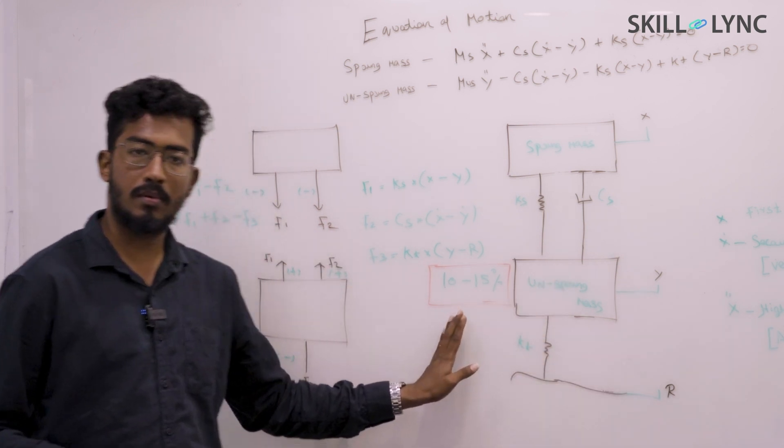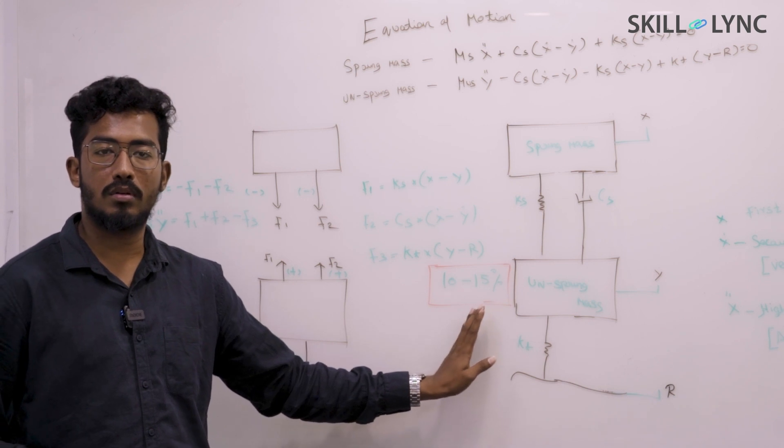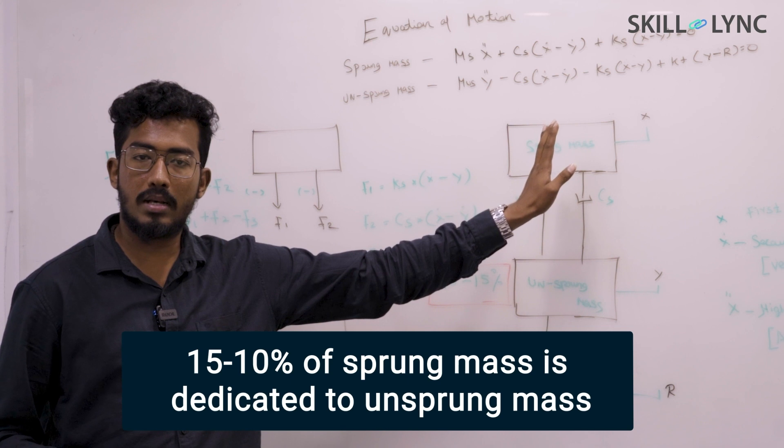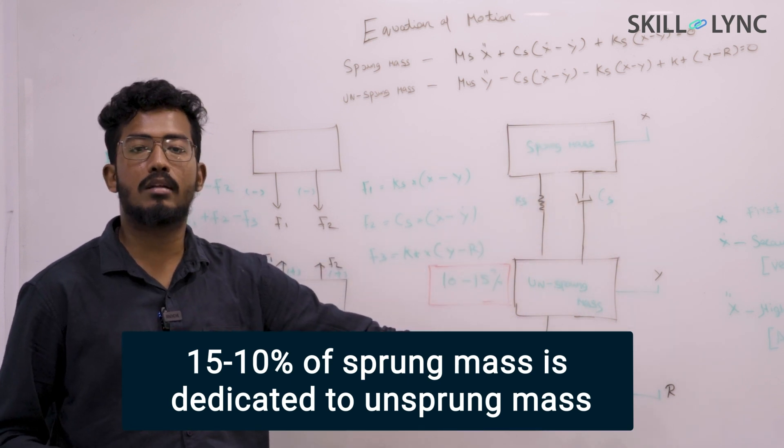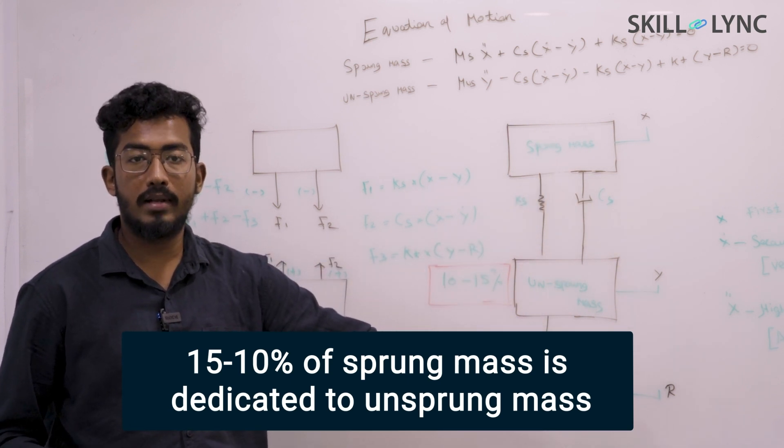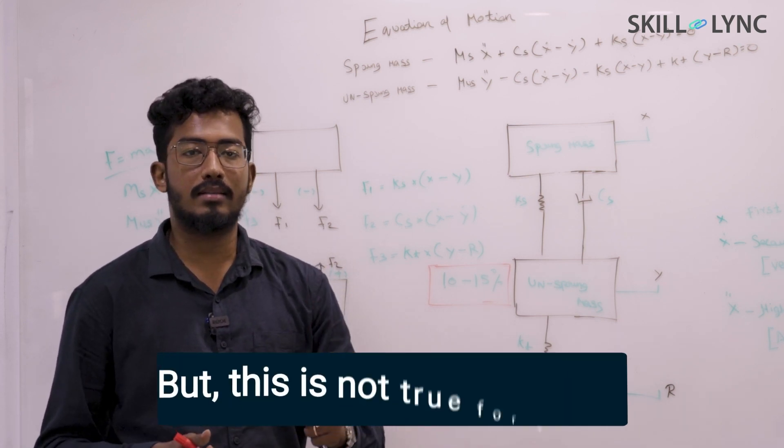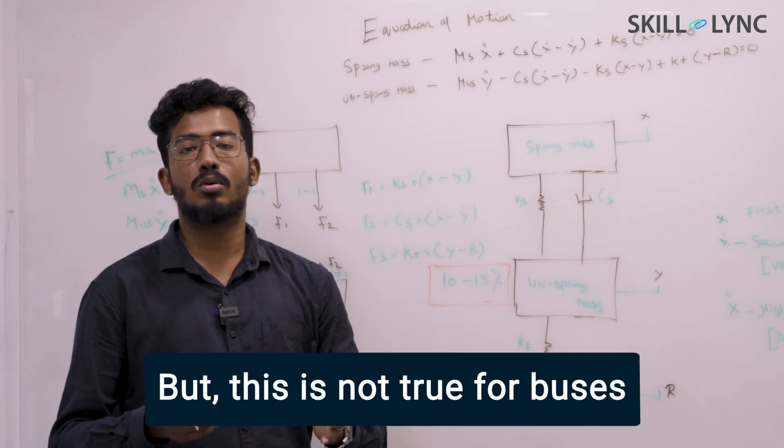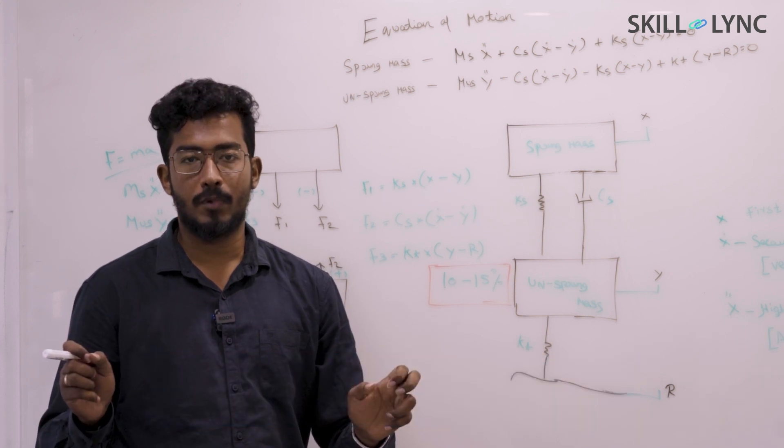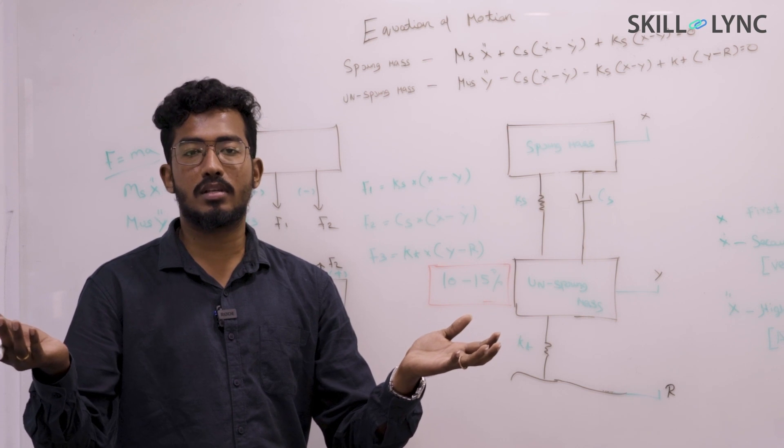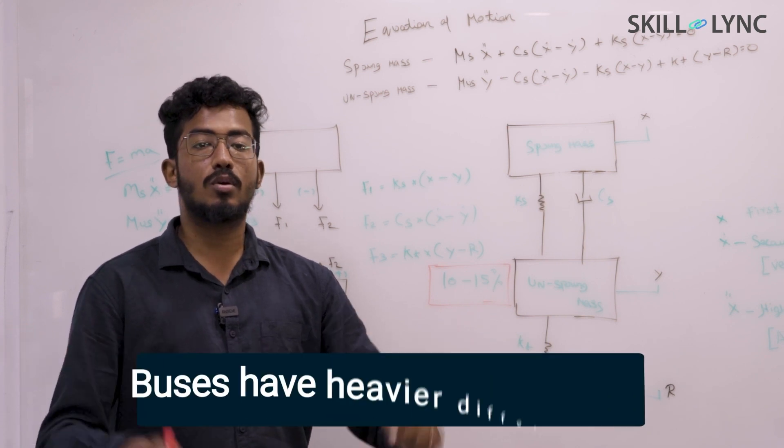What we do is we always make sure only 10 to 15 percent of your sprung mass is dedicated to unsprung mass. This is the thumb rule in industry. But this is not so in the buses. Why is it? You might have seen the big, bulky differentials in the buses, which are quite heavier in nature.